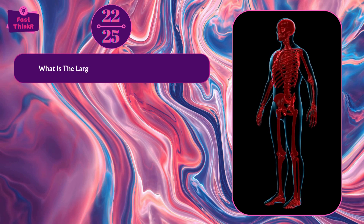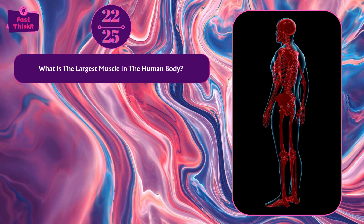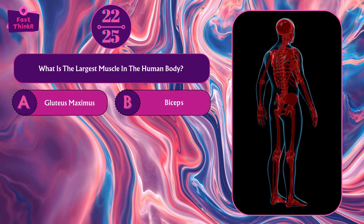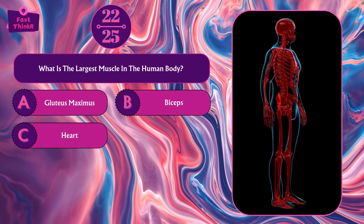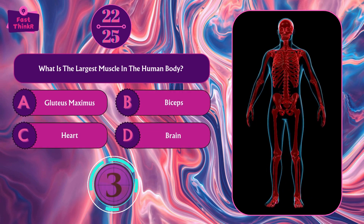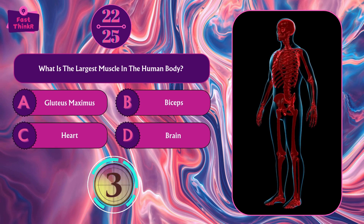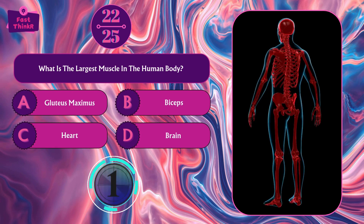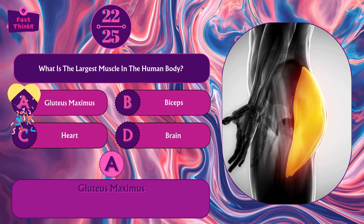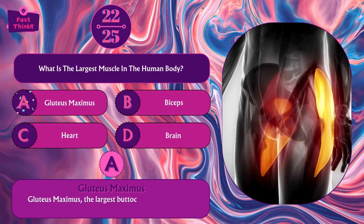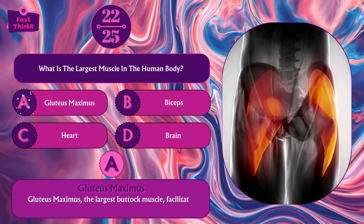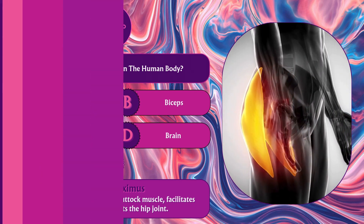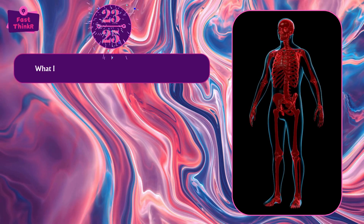What is the largest muscle in the human body? Gluteus maximus, biceps, heart, or brain? Option A — gluteus maximus. The gluteus maximus, the largest buttock muscle, facilitates movement and supports the hip joint.